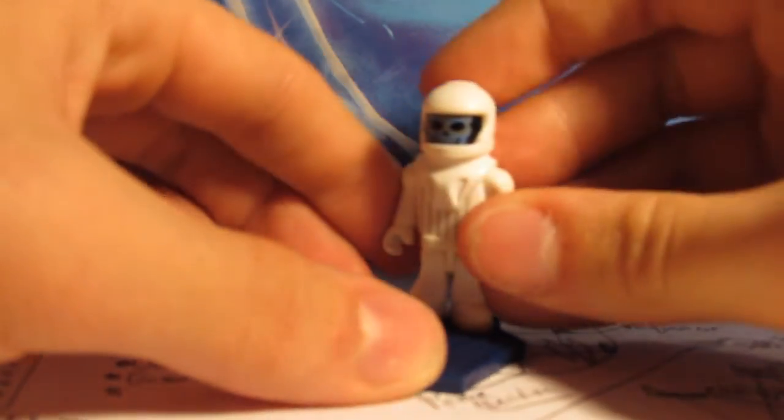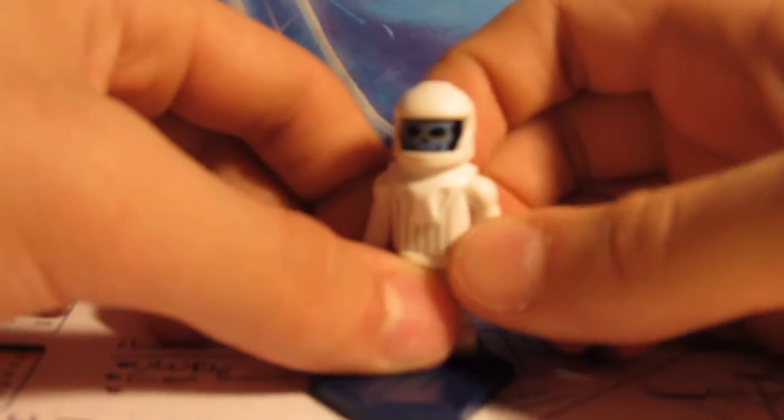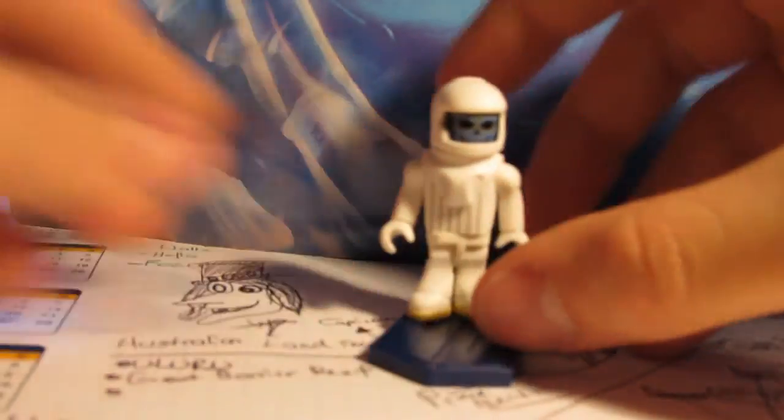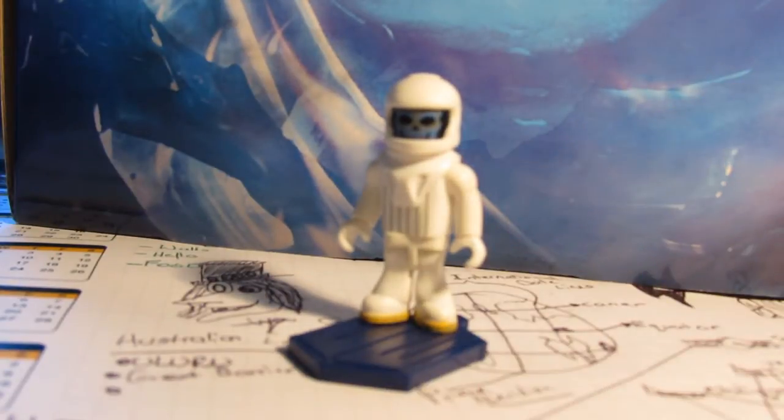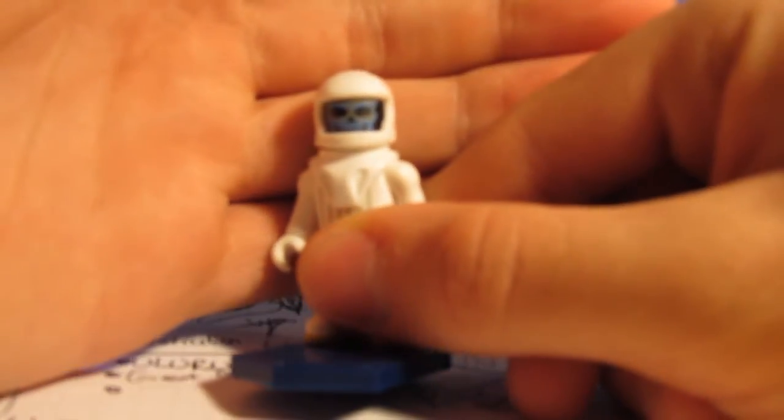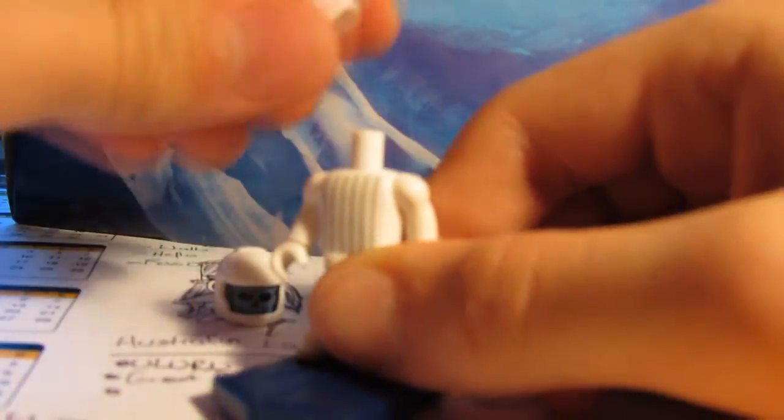And finally, another figure from David Tennant's era of Doctor Who, it's the Vashta Nerada. This figure could have been brilliant, and it is, I mean it really is. It's a great figure. They've managed to put that much detail into such a small figure. So you've got the nice Vashta Nerada head inside there. Someone's already been consumed obviously.